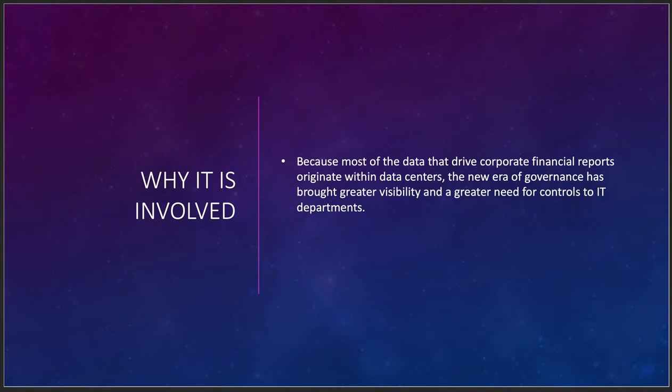Most of the data that drives corporate financials can originate within data centers. If it's in the cloud and subject to manipulation, you can get some really interesting false data. The new era of governance has brought greater visibility and greater need for controls to IT departments — understanding how data is accessed, who accesses it, when it's accessed, and who has early access to the data. One of the most interesting things about the collapse of Enron is that IT department employees at the lower level all sold their stock one to two weeks before the company collapsed.